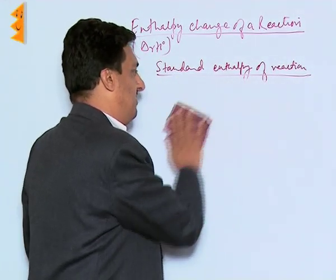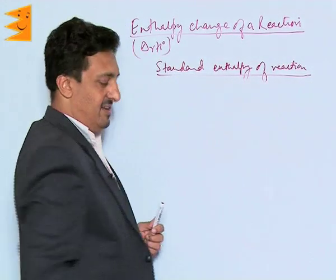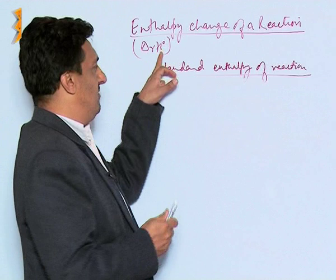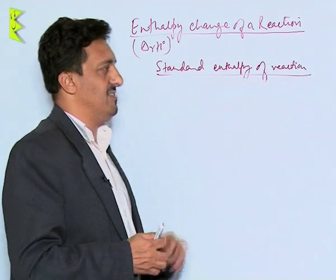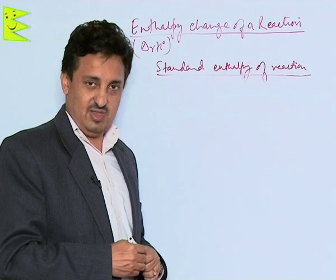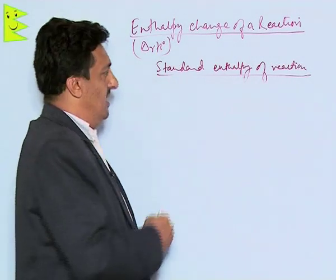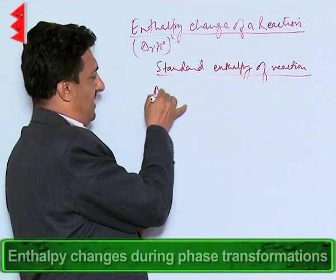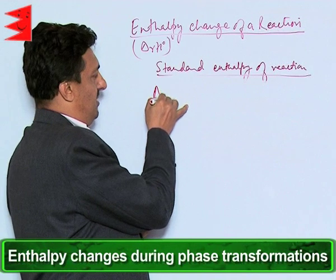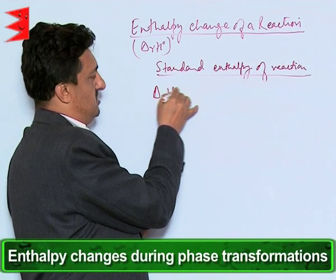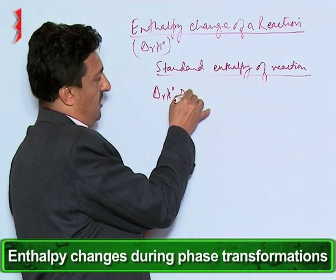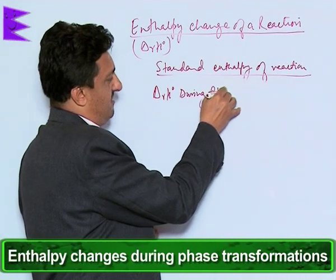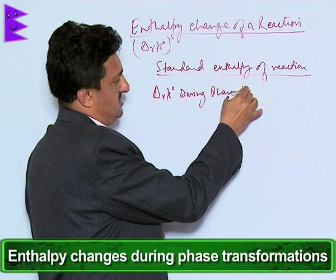To indicate the standard condition, we put a knot symbol above the H, which indicates that it is the standard enthalpy of a reaction. Now we need to know this standard enthalpy of reaction during phase transformations.